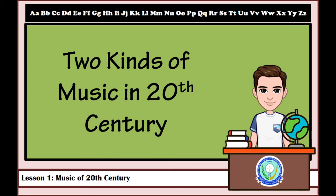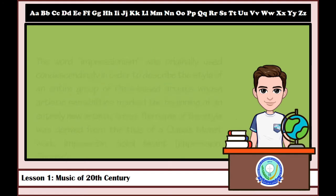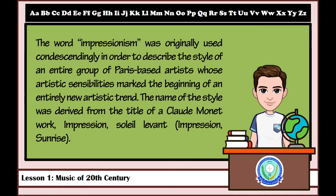We have two kinds of music in the 20th century. Let us first discuss Impressionism. The word Impressionism was originally used condescendingly to describe the style of an entire group of Paris-based artists whose artistic sensibilities marked the beginning of an entirely new artistic trend. The name of the style was derived from the title of a Claude Monet work, 'Impression, Soleil Levant' — Impression, Sunrise.